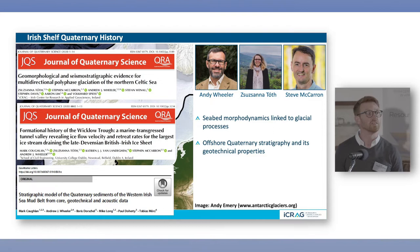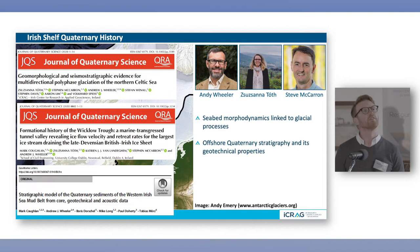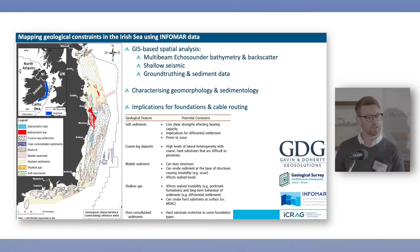Myself and Andy Wheeler, Shujana Tote and Steve McCarron in the first phase of ICRAG were very much interested in looking at glacial processes and how this caused different morphodynamics and offshore quaternary stratigraphy, and we've published some work on that of late. We feel like we have a very good understanding of past geological processes across the Irish continental shelf, which feeds directly into how we go about a lot of our constraint mapping.